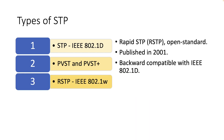Then, in 2001, the Rapid Spanning Tree Protocol or RSTP was specified in the IEEE 802.1W standard. It is an evolution of the original STP and it is backward compatible with it. RSTP provides significantly faster network convergence than the original STP. While the original STP can take 30 to 50 seconds to respond to a topology change, RSTP is able to respond to changes within a few seconds.